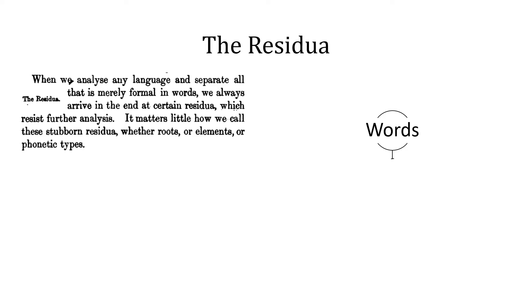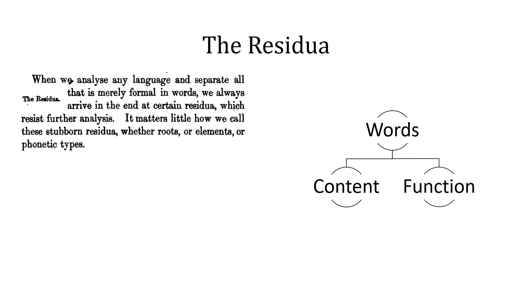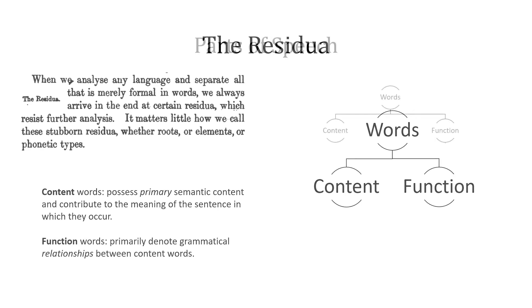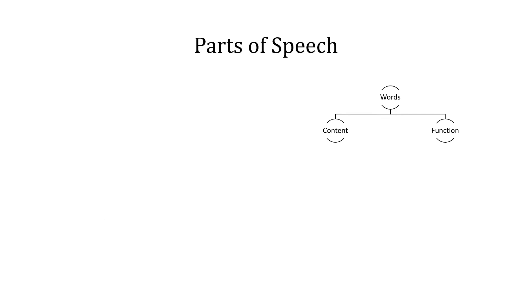When we analyze any language and separate all that is merely formal in words, we always arrive in the end at certain residua which resist further analysis. It matters little how we call these stubborn residua, whether roots or elements or phonetic types. All words can be partitioned into two broad categories: those of content and those of function. Content words typically possess primary semantic content and contribute to the meaning of a sentence. Function words primarily denote grammatical relationships between content words.